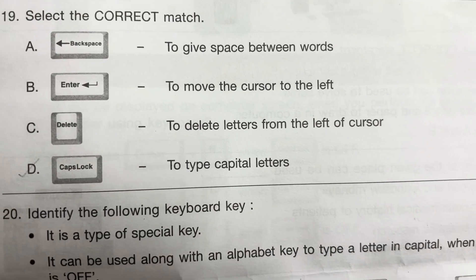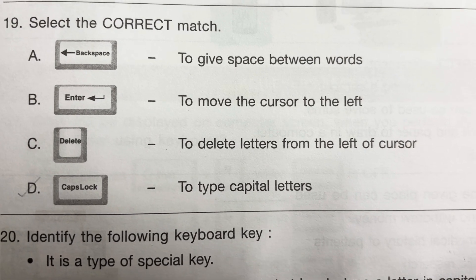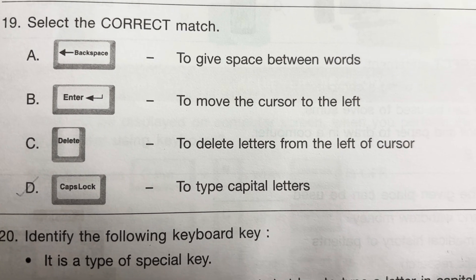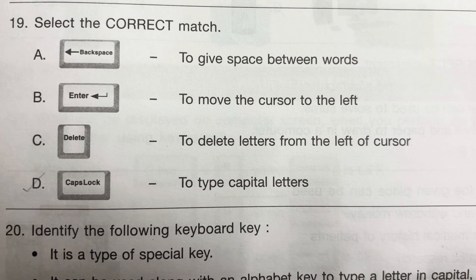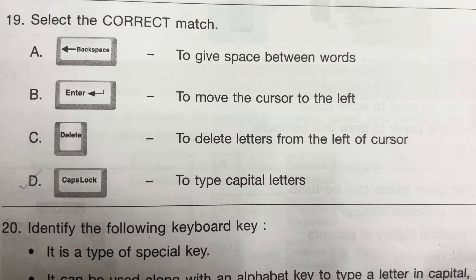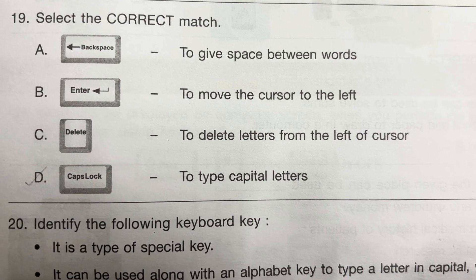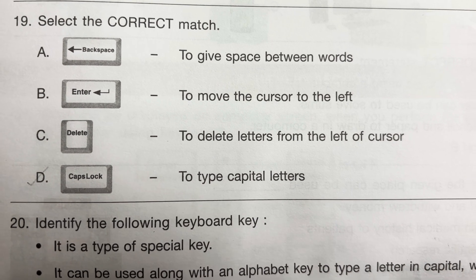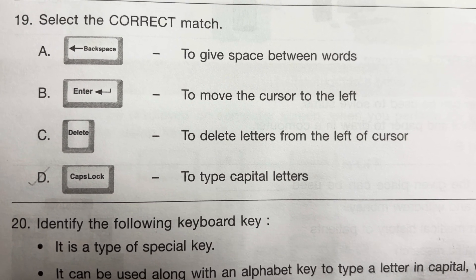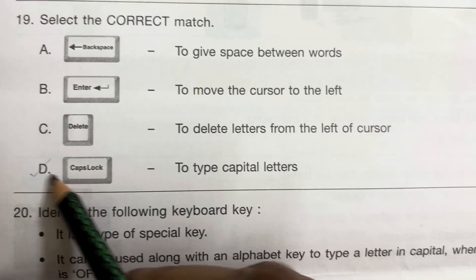Question 19: Select the correct match. Option A: Backspace — to give space between words — no. Option B: Enter — to move the cursor to the next line — correct. Option C: Delete — to delete letters from the left of the cursor — no, it deletes from the right. Option D: Caps Lock — to type capital letters — correct match. Answer is D — Caps Lock, to type capital letters.